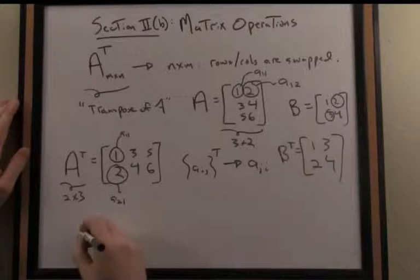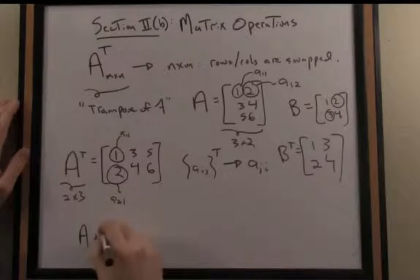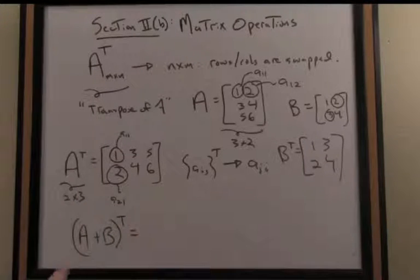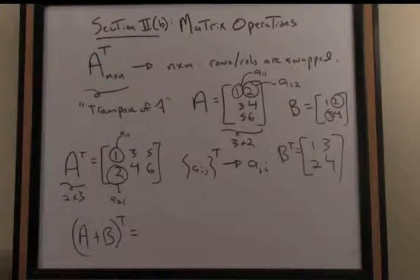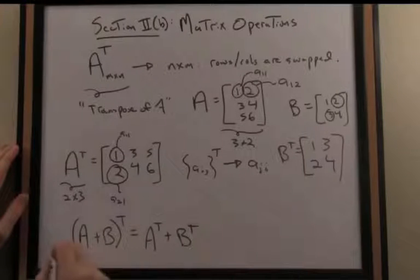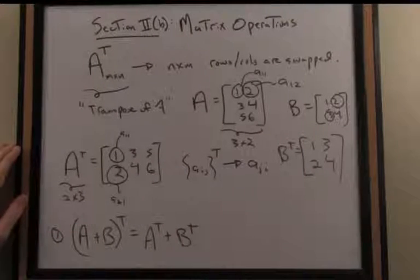One other comment about the transpose operation: we have nice properties that are commonly used. If I add two matrices together and take the transpose, (A+B)^T, that's the same as the sum of the transposes, A^T + B^T.